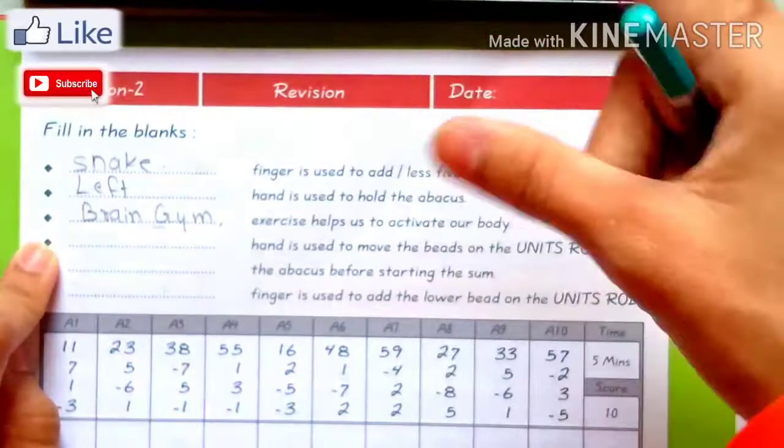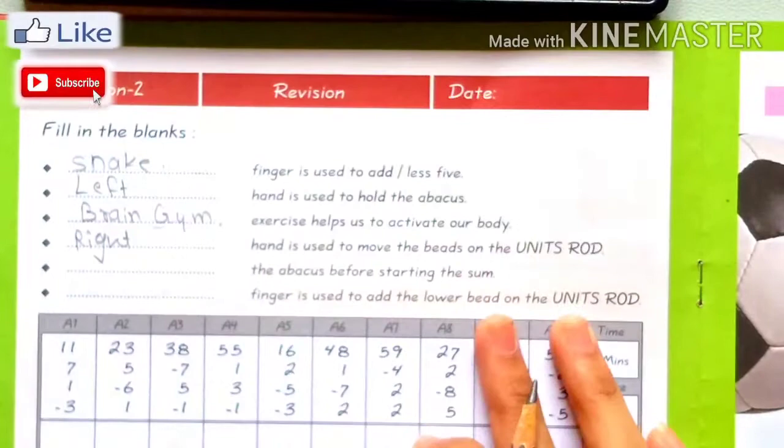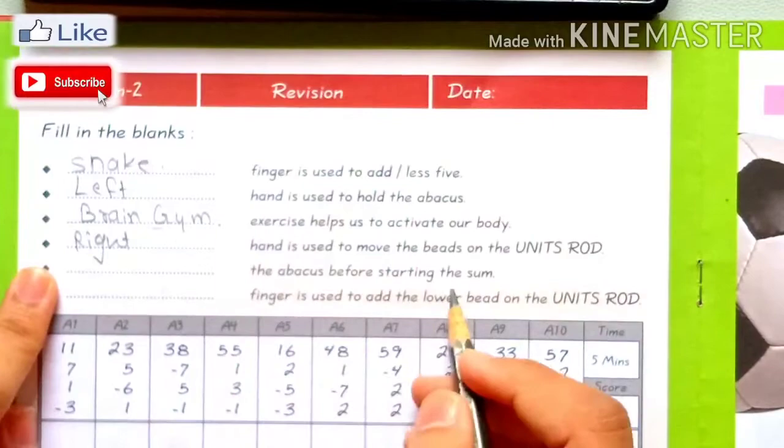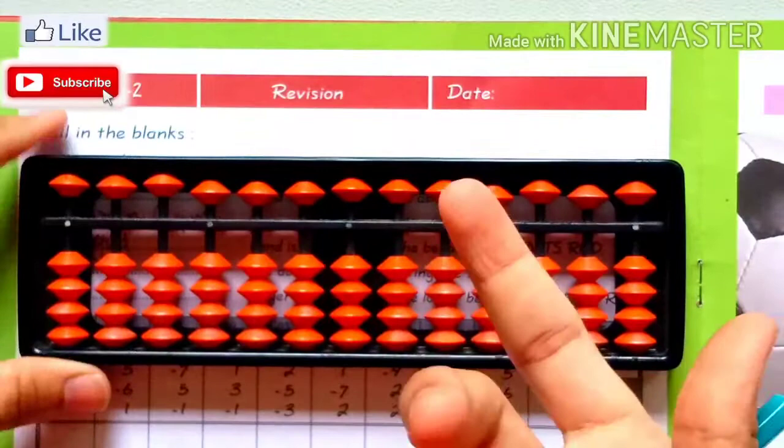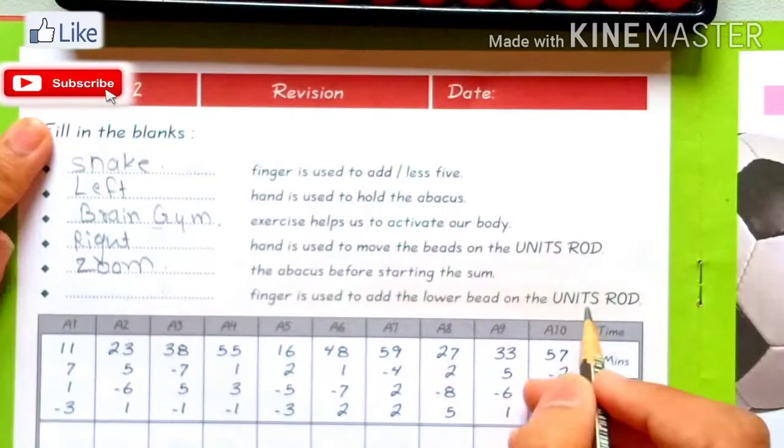Right hand is used to move the beads on the unit rod. If you take a screenshot and post a video, you decide to answer. After my answer, you will see how much you can ask. Clear the abacus before starting the sum. What do we do with abacus when we start the next sum? All clear. Thumb finger is used to add the lower bead on the unit rod. We add with the thumb.